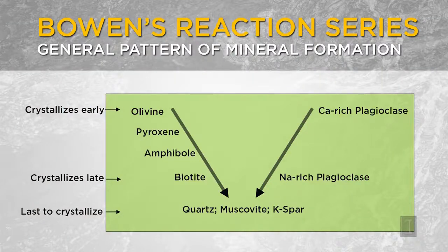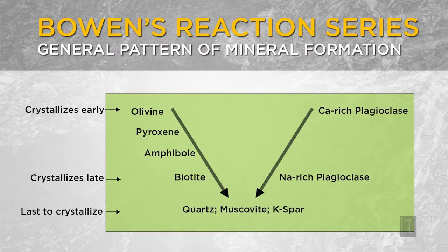Specifically, if you start crystallizing a mafic melt, the first mineral to form will be olivine, the second mineral will be pyroxene, then amphibole, then biotite, and then finally quartz and muscovite, and potassium feldspar. At the same time as those minerals are forming, plagioclase is also forming. The composition of it changes — it starts by being a calcium-rich plagioclase and later becomes a sodium-rich plagioclase. The main point is simply that when rock forms, it's not like all of the minerals form at once; different minerals form at different times in sequence, and during the whole process there are some very complicated chemical reactions taking place.